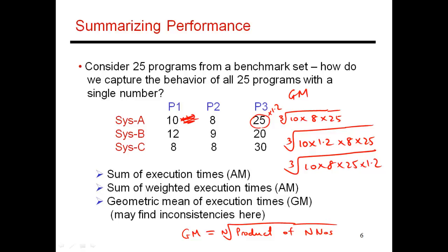So GM has that nice property that it gives each program equal importance. And by multiplying these numbers, you are able to eliminate the need for a reference machine. You don't have to normalize these numbers, and you can compare the behavior of any two programs without requiring this reference machine. And because of this practical advantage, this is the measure that is actually being used for something like the SPEC rating.